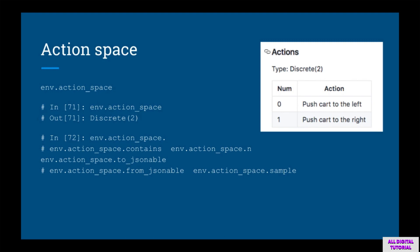We should also look at the action space, which behaves similarly. There are two possible actions: push the cart to the left, or push the cart to the right. This makes the problem easier than the full CartPole problem where you model force as a continuous variable. In the console, env.action_space returns a discrete object with parameter 2. A discrete object has a contains method, a sample method, and an attribute n that tells us how many actions are in the action space.